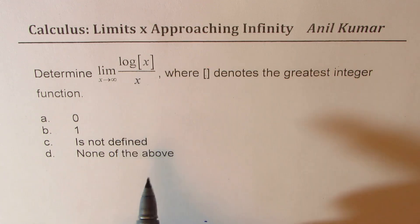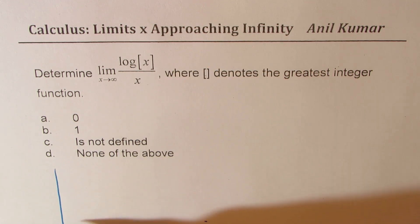Let us first understand the greatest integer function. That basically means that if I have, let's say, 1.2, then the greatest integer value is the integer here, which is 1.